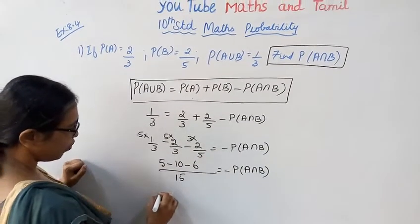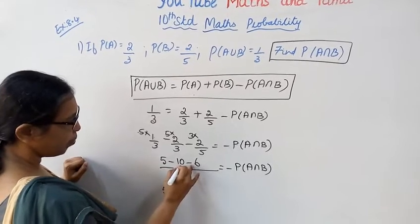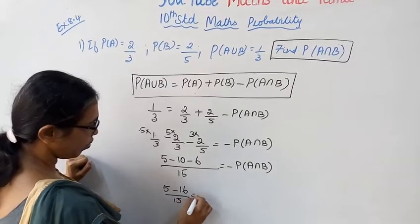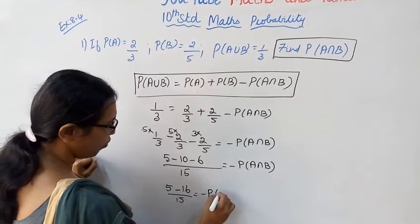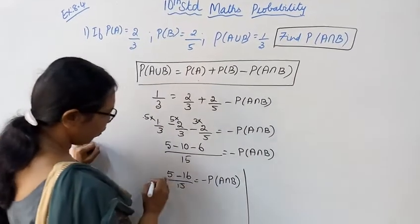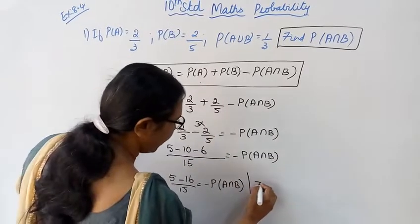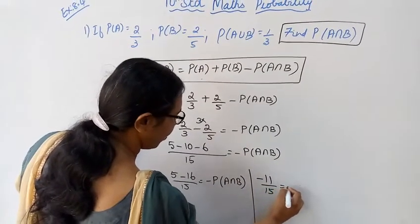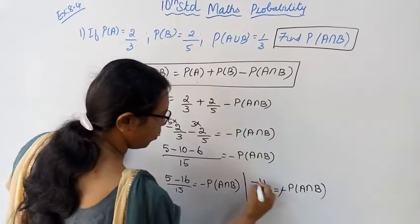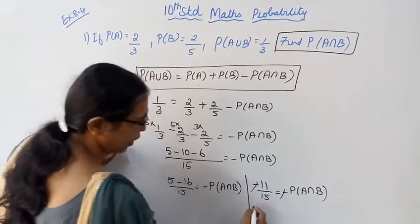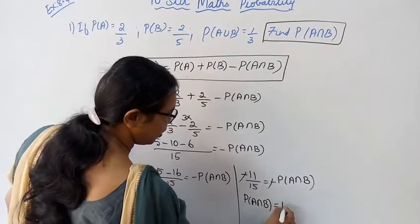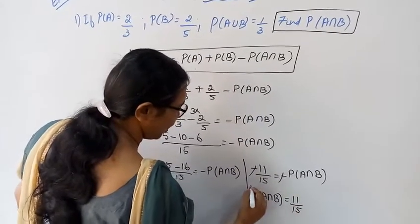Now, 5 minus 10, minus 6, minus 16 by 15 equal to minus P of A intersection B. Now, 5 minus 16, minus 11 by 15 equal to minus P of A intersection B. Cancel the negatives — P of A intersection B equal to 11 by 15. Answer.